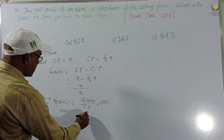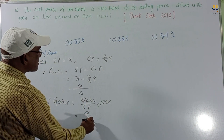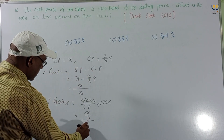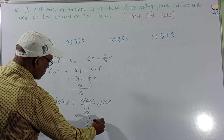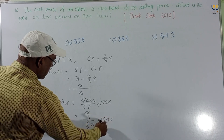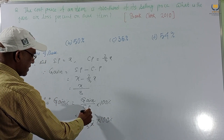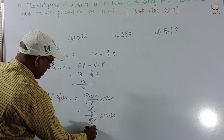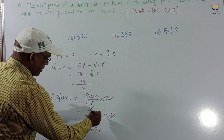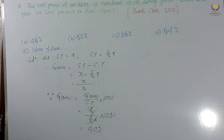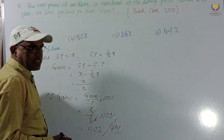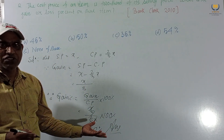Gain percent = (x/3) / (2x/3) × 100. The x and x cancel, the 3 and 3 cancel, giving 1/2 × 100 = 50 percent. So answer B — 50 percent — is the correct option. Very easy solution.